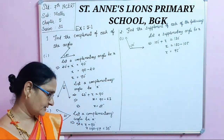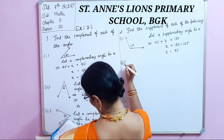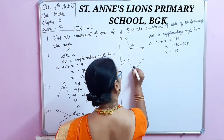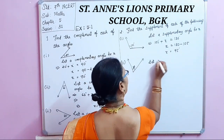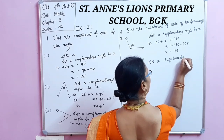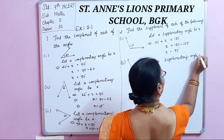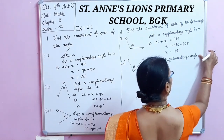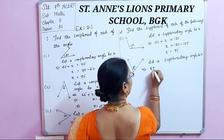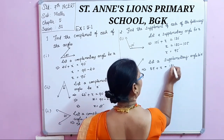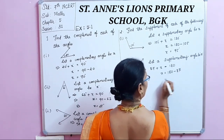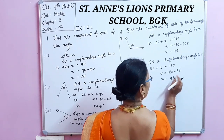The second angle is 87 degrees. Let the supplementary angle be X. Then 87 plus X equals 180. Since 87 moves to the other side it becomes minus, so X equals 180 minus 87, which gives X equals 93 degrees.